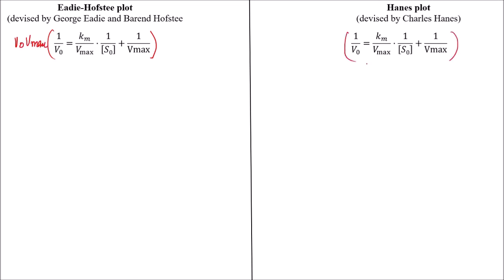Let us simplify this. When we multiply V0 V max toward this side, V0 and V0 will be cancelled out and we will get V max equals to, and when we multiply with this equation, V max and V max will be cancelled out and only variable left is V0 and S0.